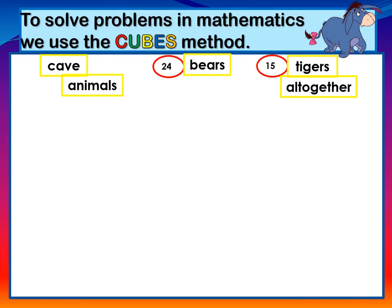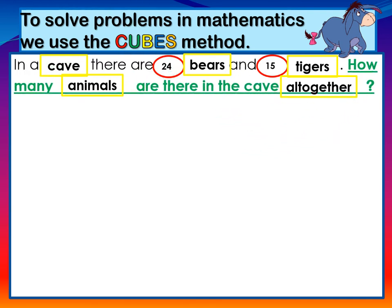C-U-B-E-S. Cubes. Let's look at the following word problem as an example. In a cave, there are 24 bears and 15 tigers. How many animals are there in the cave all together?